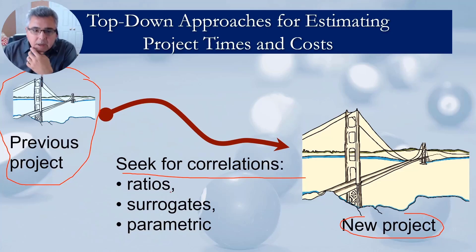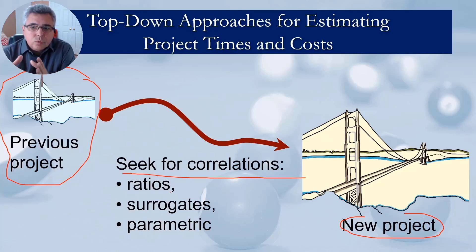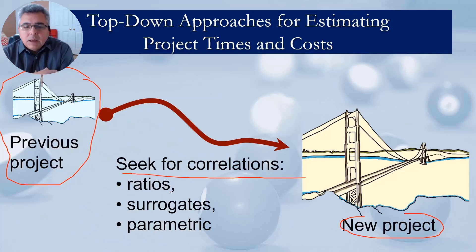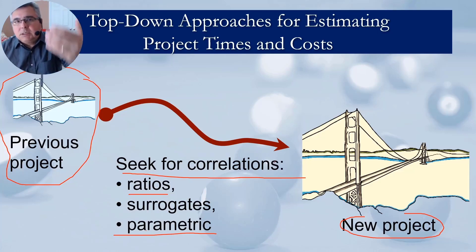Here you can have several things. You can have ratios, or you can have parameters that you can use. Like the example of the house: if you are building a house of 2,500 square feet and you previously built one of 2,000 square feet, that size is a parameter. So you can have what is called a parametric correlation, or you can say it's a ratio — it's 25% bigger. And with that, we try to project the times and costs for the new project.